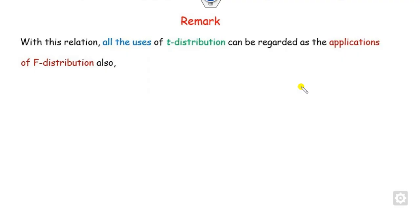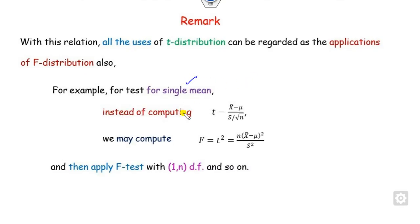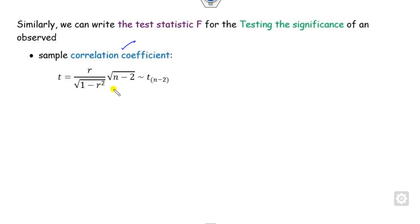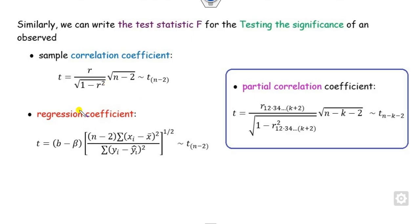The advantage of this result is that you can use the T distribution as an application of the F distribution as well. Instead of computing the T statistic directly, you can compute F using T-squared and apply the F-test with degrees of freedom 1 and N. Similarly, you can apply the F-test to the sample correlation coefficient, regression coefficients, and partial correlation coefficients by converting from T statistics to F statistics.